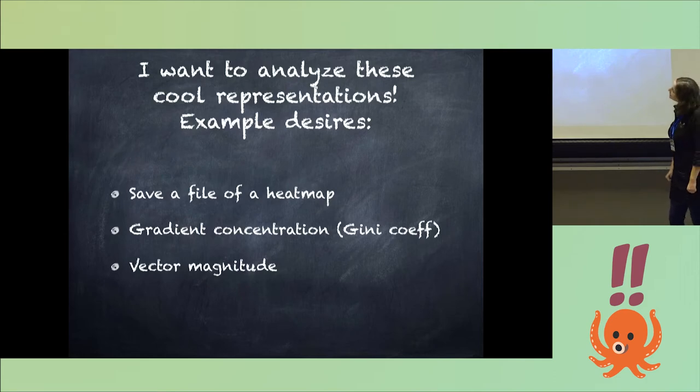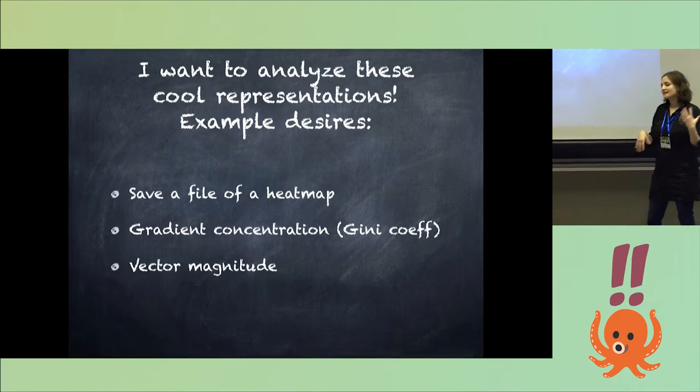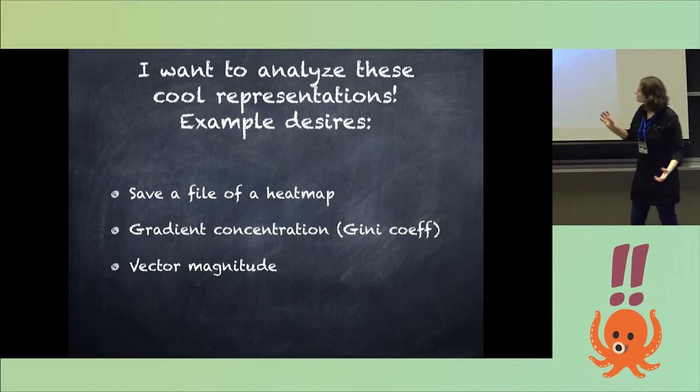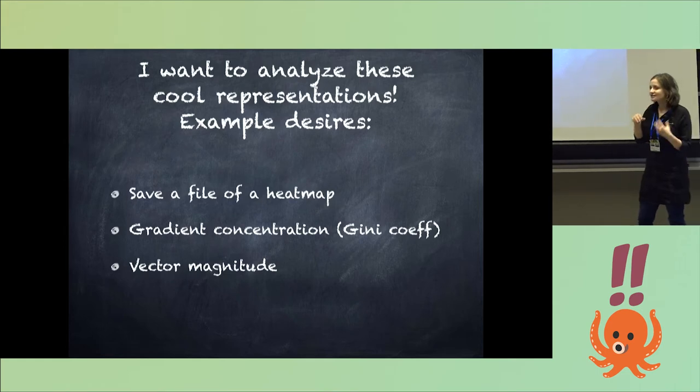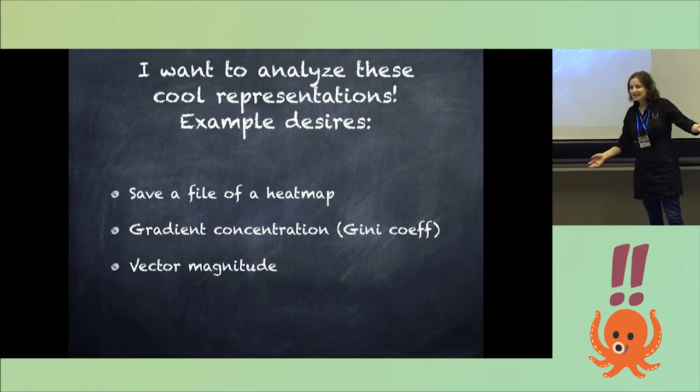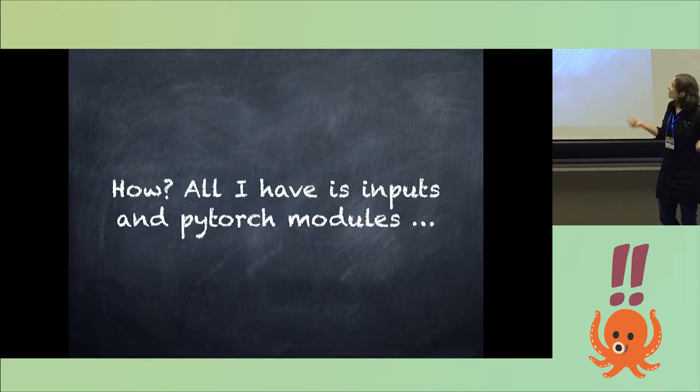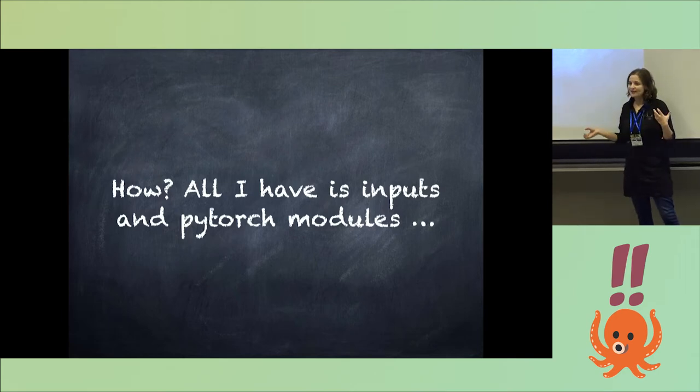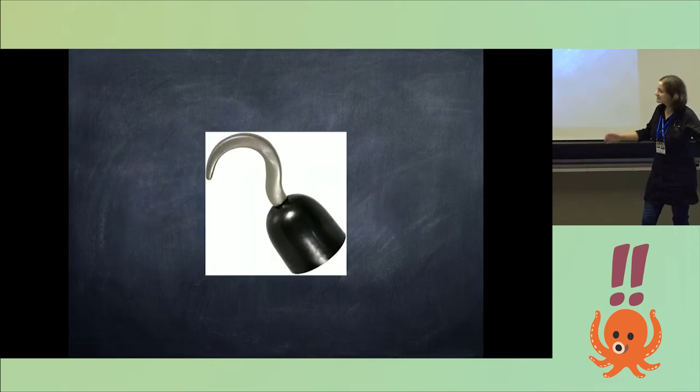So I want to look at what's happening during my training or inference time, like while it's running. I want to see what's happening with the representations. Maybe I want to save some heat maps of the different activations. Maybe I want to look at the concentration of gradients, which is something that indicates whether your network is kind of memorizing as opposed to learning a general function. Maybe I just want to see the magnitude of the error at each module. But all I have is inputs and some PyTorch modules that are trained or not. So what am I going to do? Hooks. Yeah.